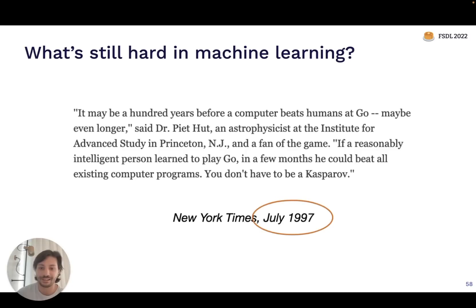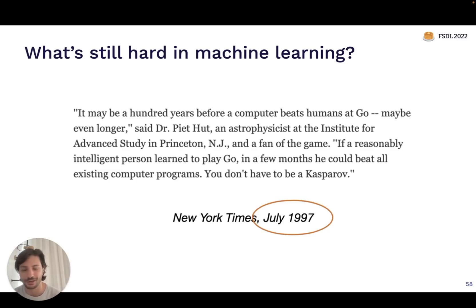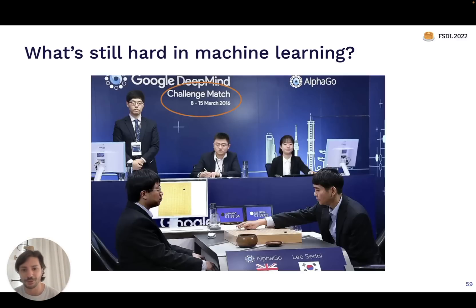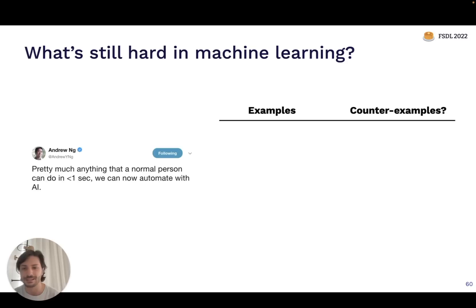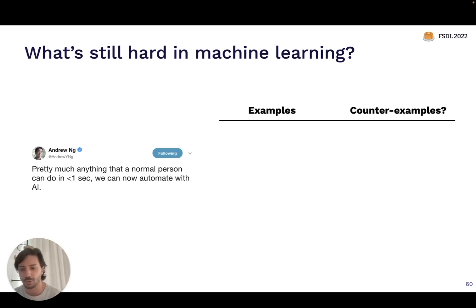In the late 90s, the New York Times predicted it might be 100 years before a computer beats a human at Go. Less than 20 years later, DeepMind beat the best humans in the world at Go. These predictions are notoriously difficult to make. One heuristic you'll hear is from Andrew Ng: anything a normal person can do in less than one second, we can automate with AI. I think this is actually not a great heuristic, but you'll hear it a lot. Machine learning systems are still no good at things like understanding human humor or sarcasm, complex in-hand manipulation, or generalizing to brand new scenarios never seen before.